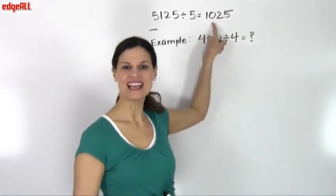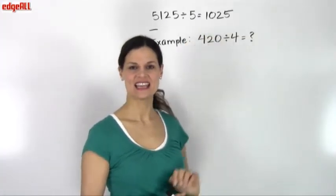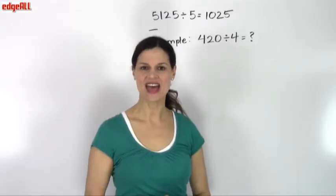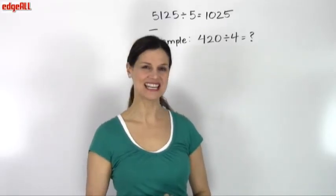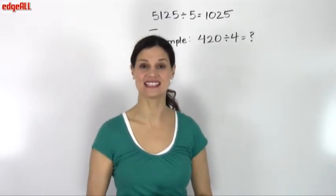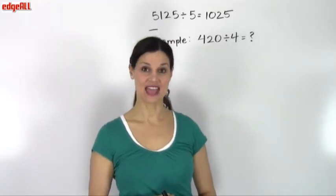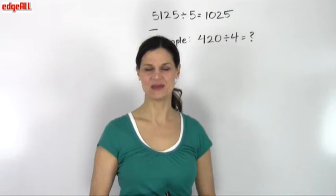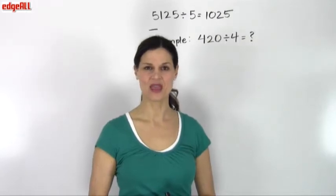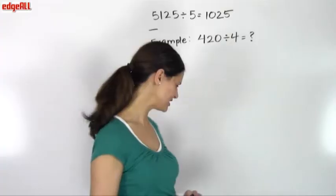It can be easy to get hung up when that zero appears in the quotient, and kids tend to make mistakes. To understand it better, let's take a look at an example and work out a problem in which a zero will appear in our quotient.